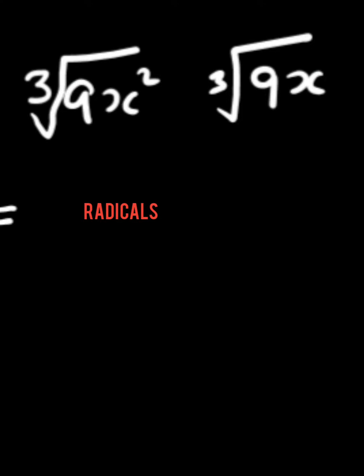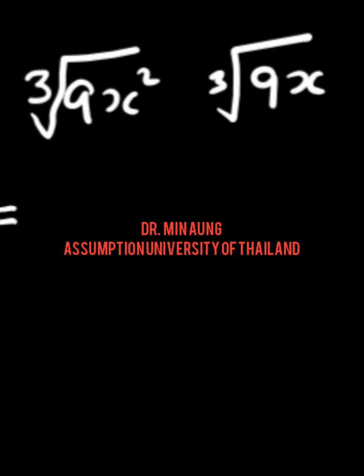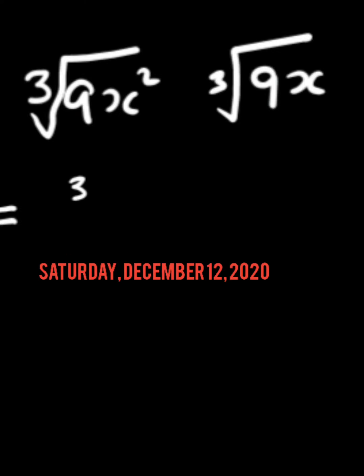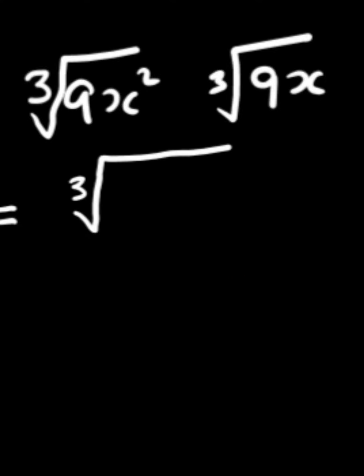So to simplify, both are cube roots, we can try by combining two radicals. 9x squared plus 9x is 81x power 3.